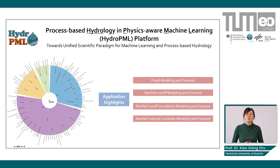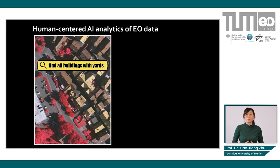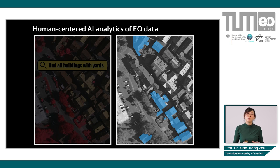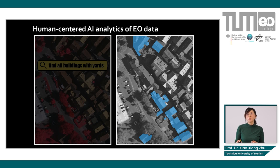Here is an example of reasoning. Nowadays, it's common to input an image to a model and get a semantic segmentation result, but how to involve a human in the loop is key. This example shows image referring: you input an image and a natural language query like 'find all buildings with yard' to a deep learning model. With the reasoning model, it is possible to produce a specific mask for what you are searching for — all buildings with a yard, as shown on the right.